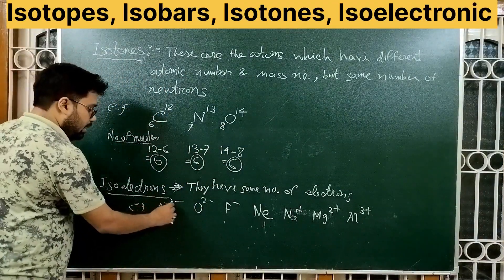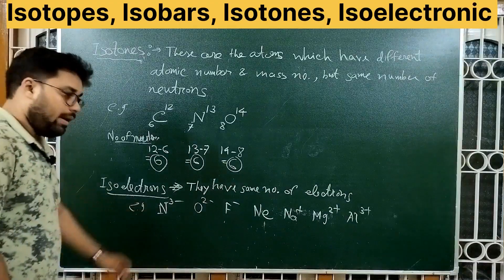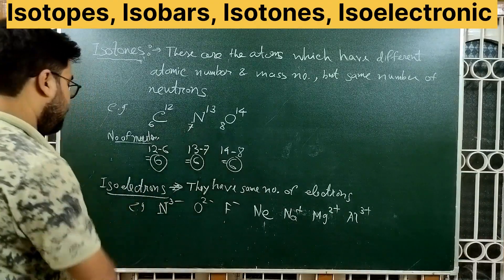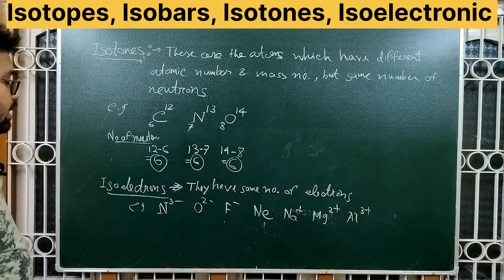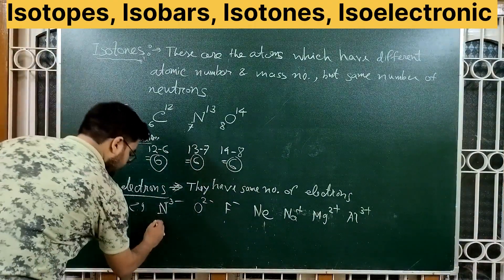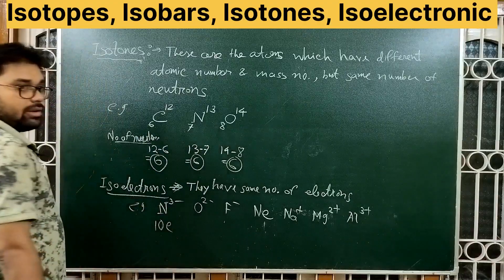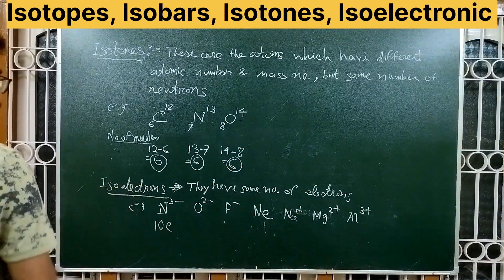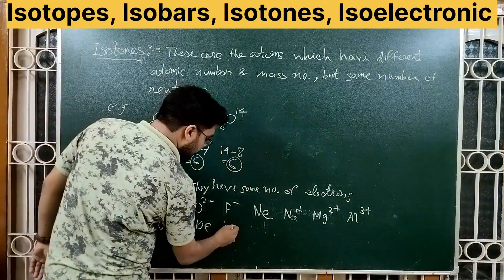Let's verify: nitrogen has atomic number 7, so it has 5 protons — wait, nitrogen's atomic number is 7, so it has 7 protons and 7 electrons. N³⁻ gains 3 extra electrons, giving 10 electrons total. Oxygen has atomic number 8; O²⁻ gains 2 extra electrons, also giving 10 electrons.